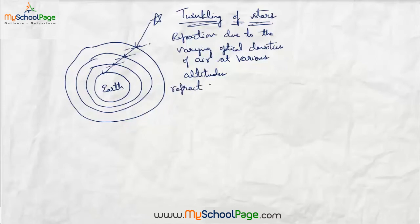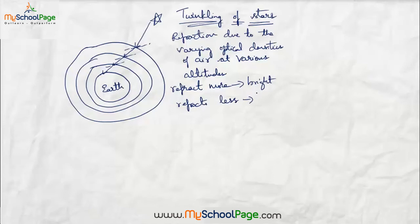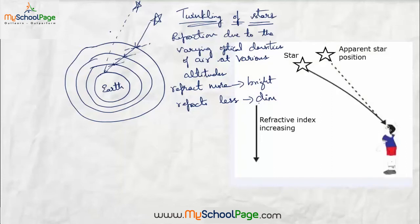So by the time it has reached the earth, you can see a shift in the position. When the atmosphere refracts more starlight, the star appears to be bright, and when the atmosphere refracts less starlight, the star appears to be dim. In this way, the starlight reaching our eye increases and decreases continuously due to atmospheric refraction. The person will actually see the star somewhere shifted, because our eye sees the star at the position from where light enters it in a straight line. This shows the apparent star position due to atmospheric refraction — this is the direction where refractive index is increasing, and this is the actual position of the star.